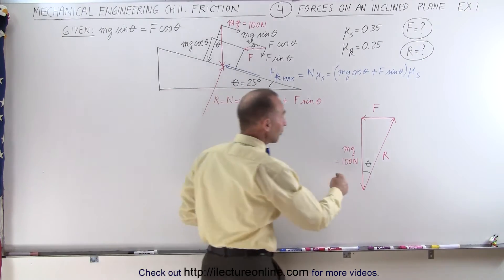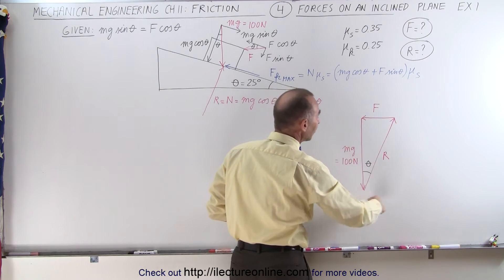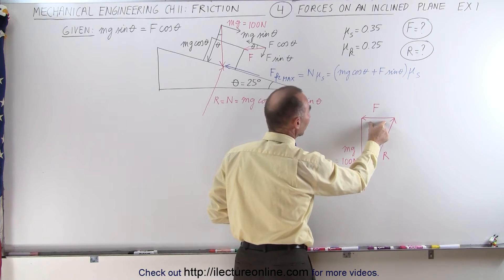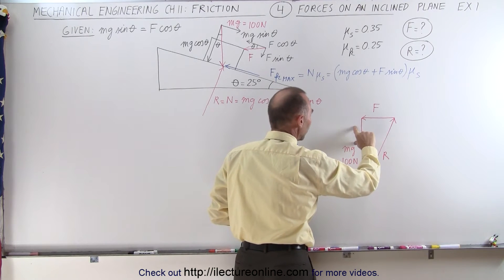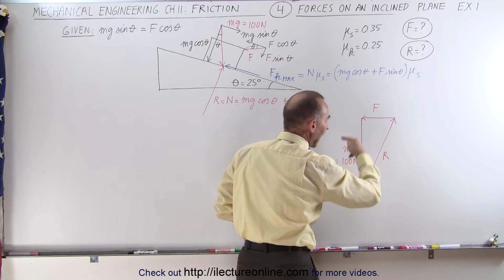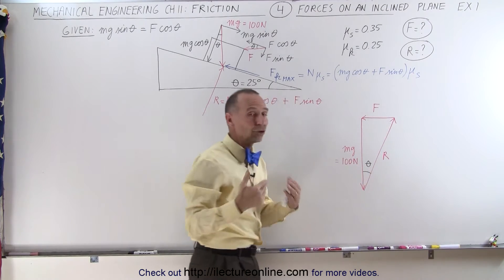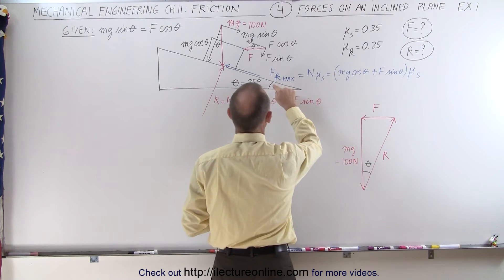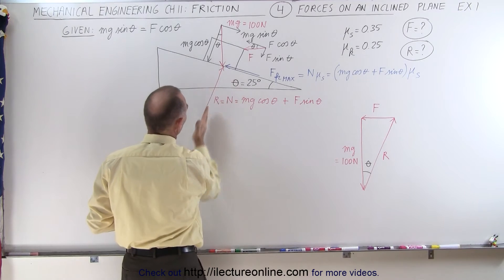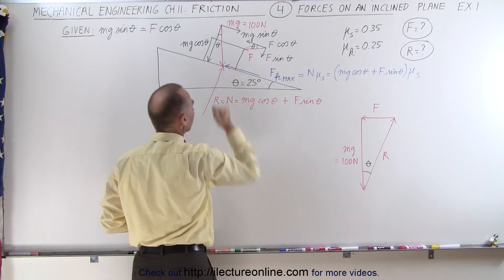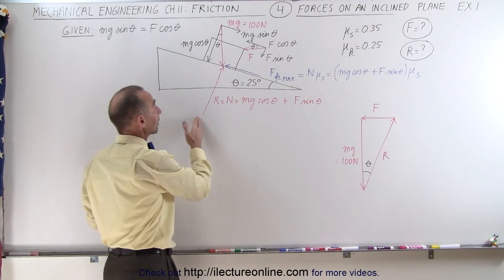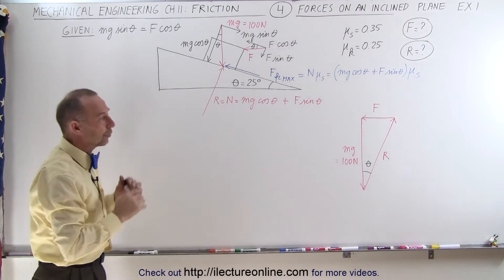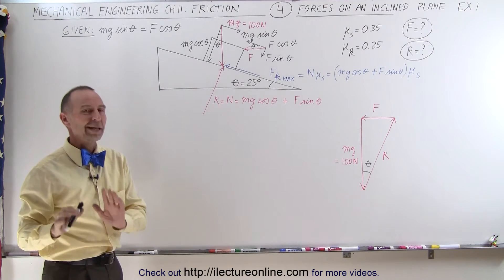I am also going to show you that you can solve this problem quite easily using this combination of forces. Notice that if we add the force applied to the block, the weight of the block, and the reaction force, these three forces should add up to zero. The angle theta here is the same as the angle theta there because the reaction force is pointing perpendicular to the inclined plane. If it were not perpendicular, we would need to find a different angle — but that is for a later example.